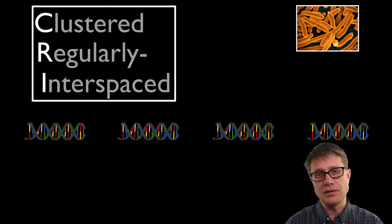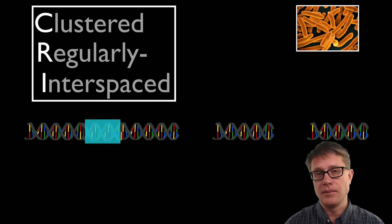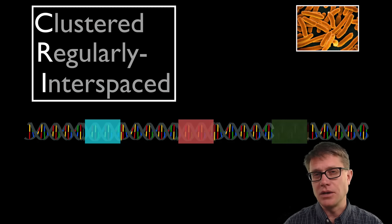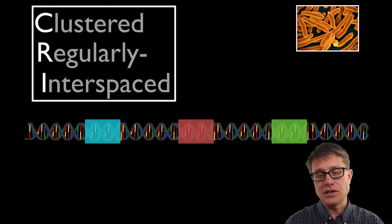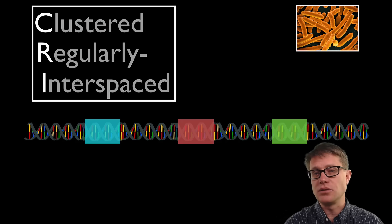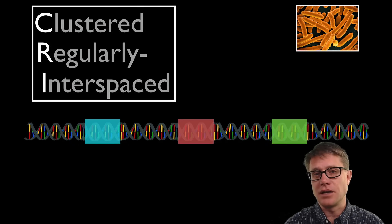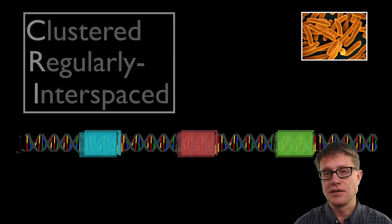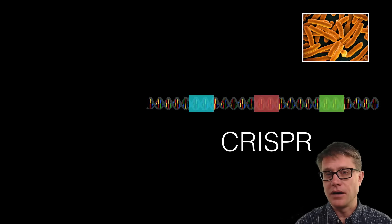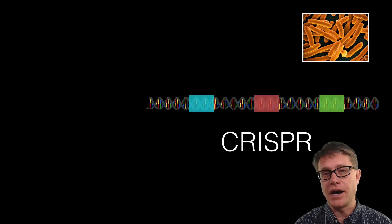But they are interspaced, and so what is in the middle we are going to have what is called spacer DNA. Now what is interesting about the spacer DNA is that it is not identical — each segment of spacer DNA is going to be unique. This puzzled scientists when they identified this back in the 80s and 90s. But in the 2000s what they found is that that spacer DNA matches up perfectly with viral, especially bacteriophage, DNA.